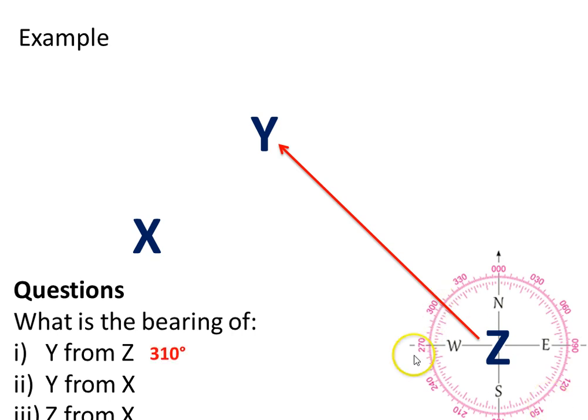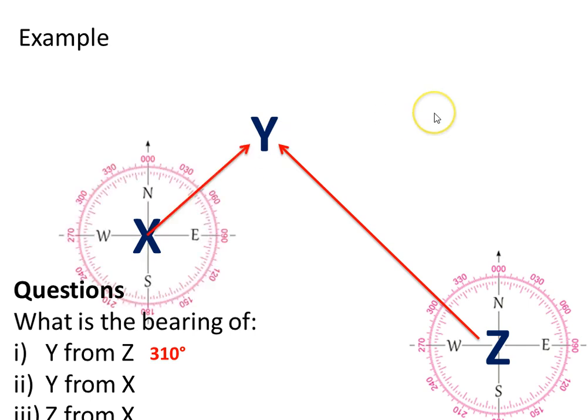The next question, Y from X? Leaving X travelling towards Y. We place the bearings again. We track it around 30, 40, 45 degrees is exactly the bearing distance.